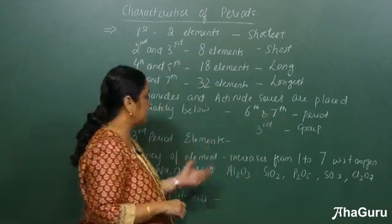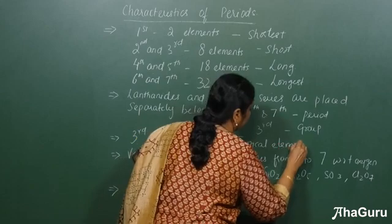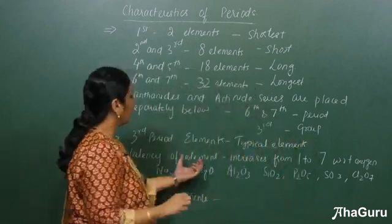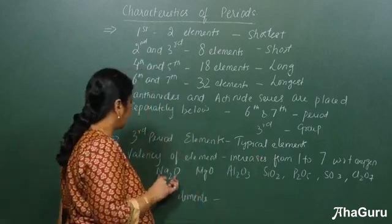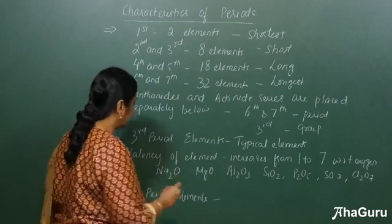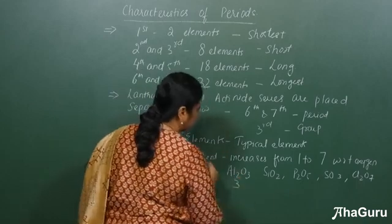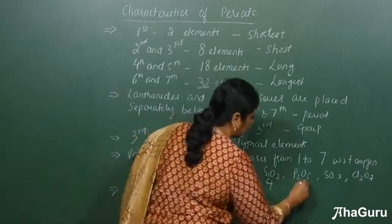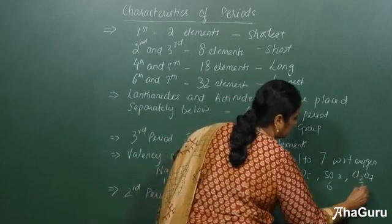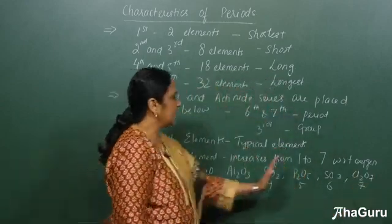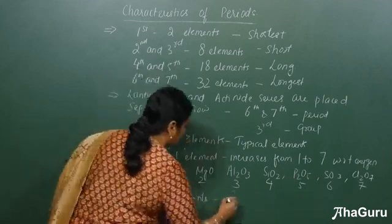The group 3 elements are called typical elements. The valency of elements increases from 1 to 7 with respect to oxides. For example: Na₂O has valency 1, MgO has valency 2, aluminium oxide is 3, silicon oxide is 4, P₂O₅ is 5, SO₃ sulphur trioxide is 6, and Cl₂O₇ gives chlorine a valency of 7 — showing a clear increase in valency across the period. The second period elements are called bridge elements.